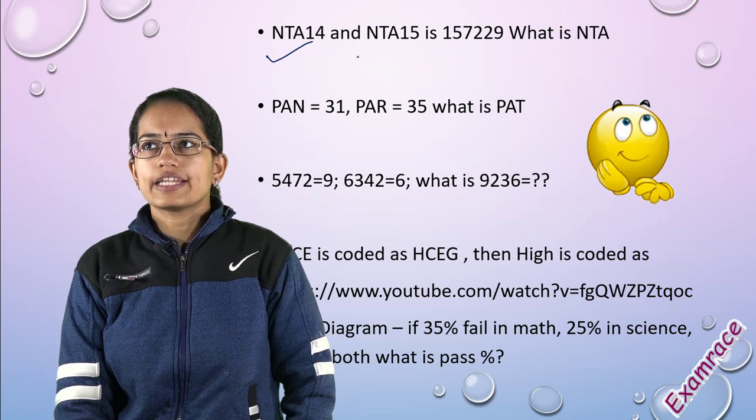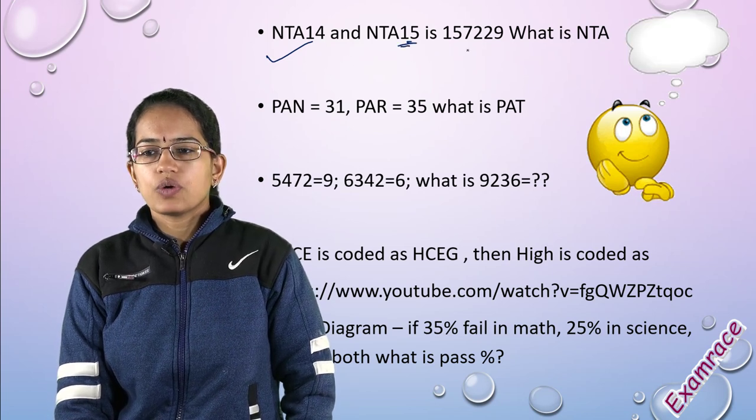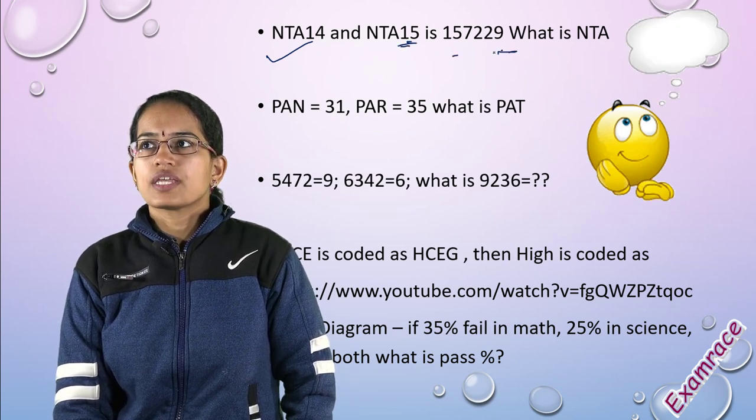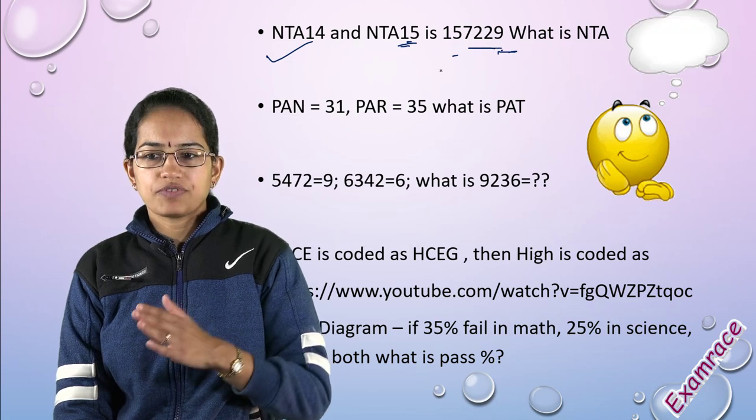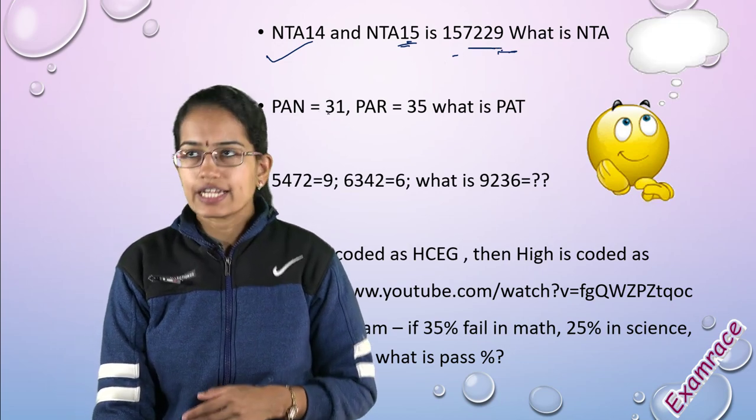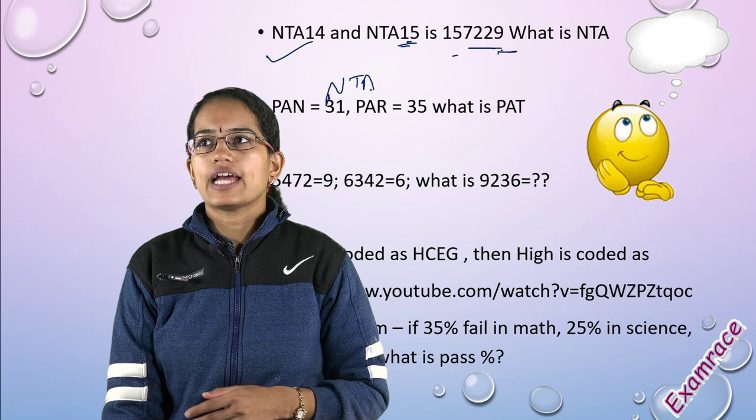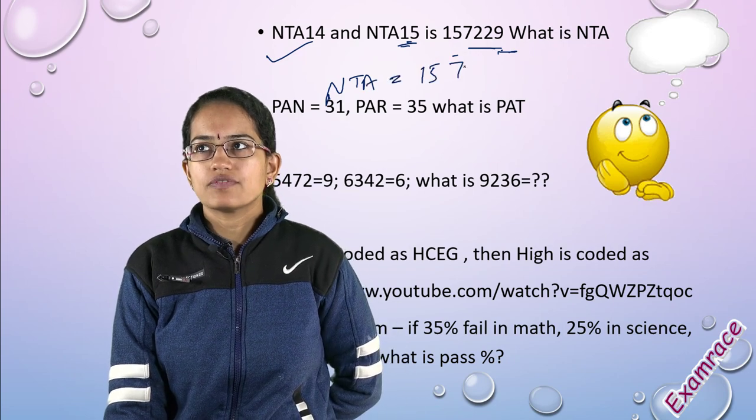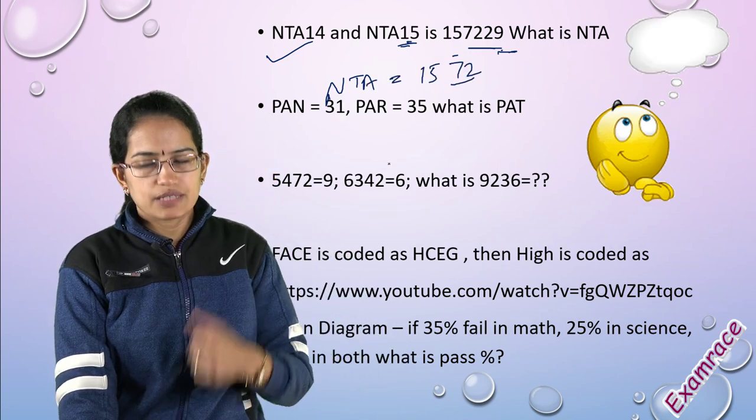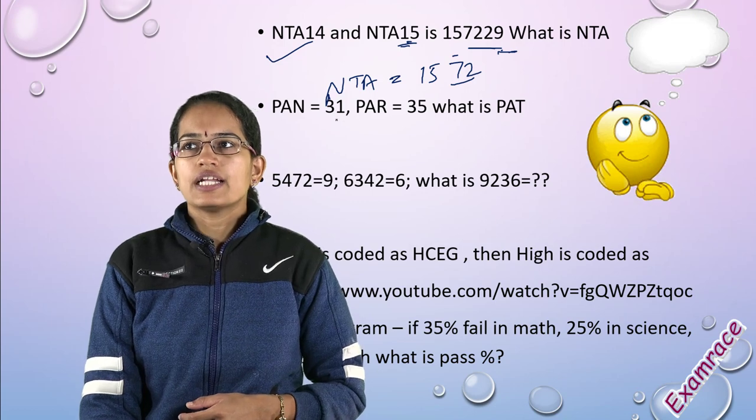You had NTA 14 and NTA 15, with a sum given. If you add 14 and 15, we get 29. So what is NTA? The question was simple - NTA is 1, 5, 7, 2, 29. That was a very simple way of understanding it.